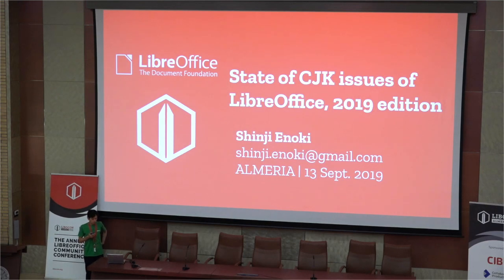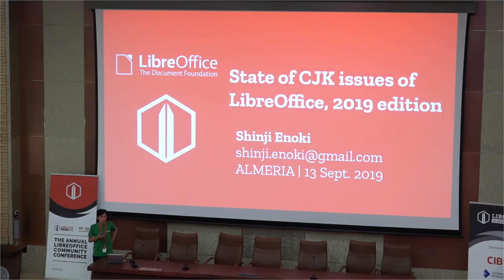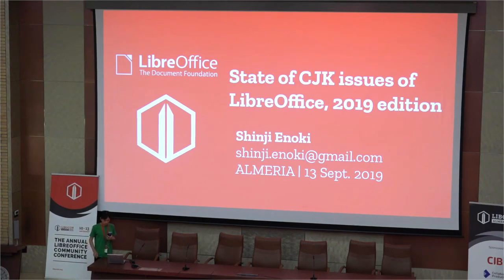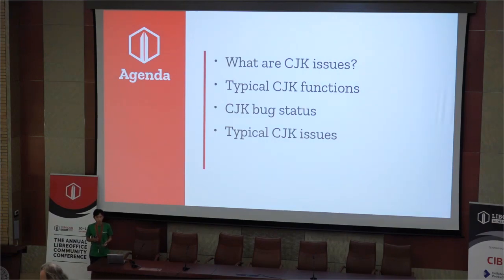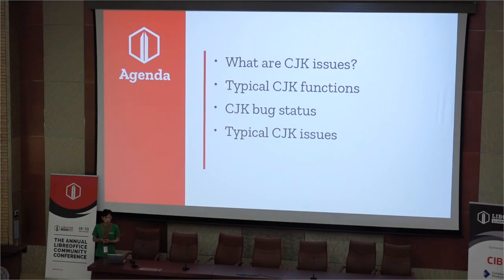Hello everyone. This talk is a state of CJK issues. The outline has four points: what are CJK issues, typical CJK functions, CJK bug status, and typical CJK issues.